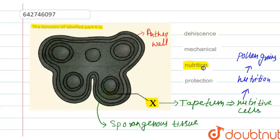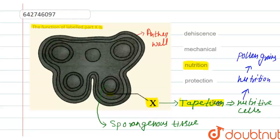This is our correct option. The question asked for the function of labeled part X. The labeled part X is tapetum, and the function of tapetum is providing nutrition to the developing pollen grains. So our correct option is the third one, which is nutrition.